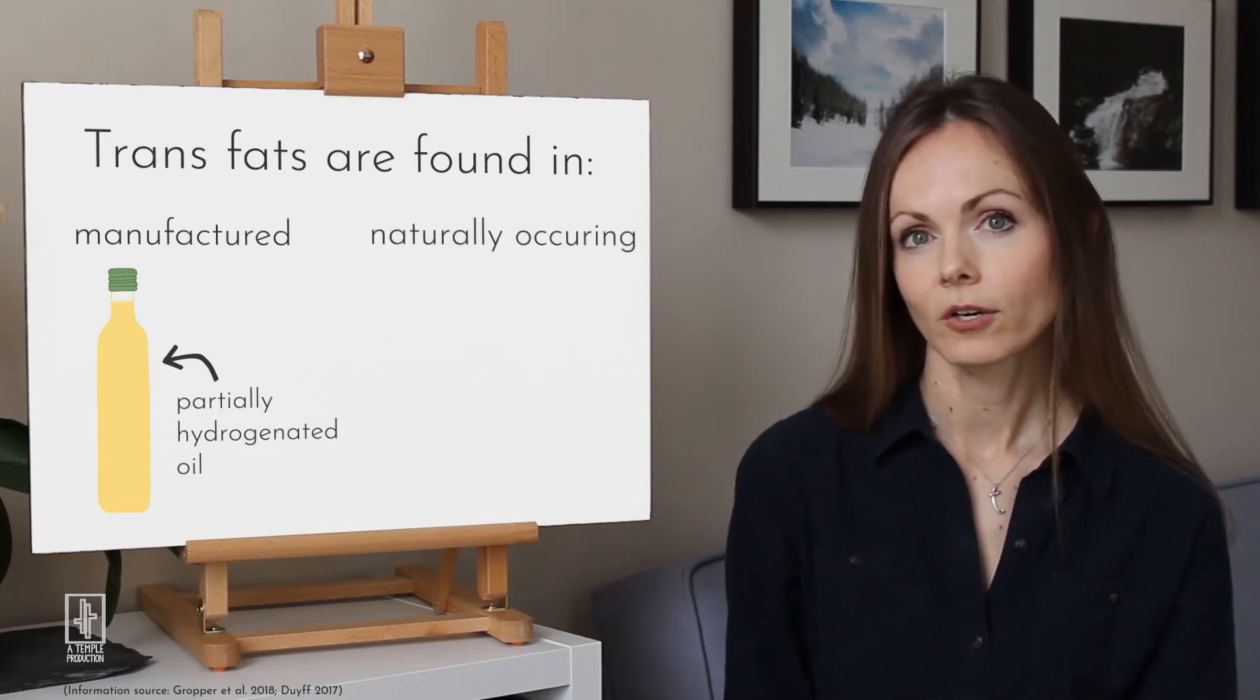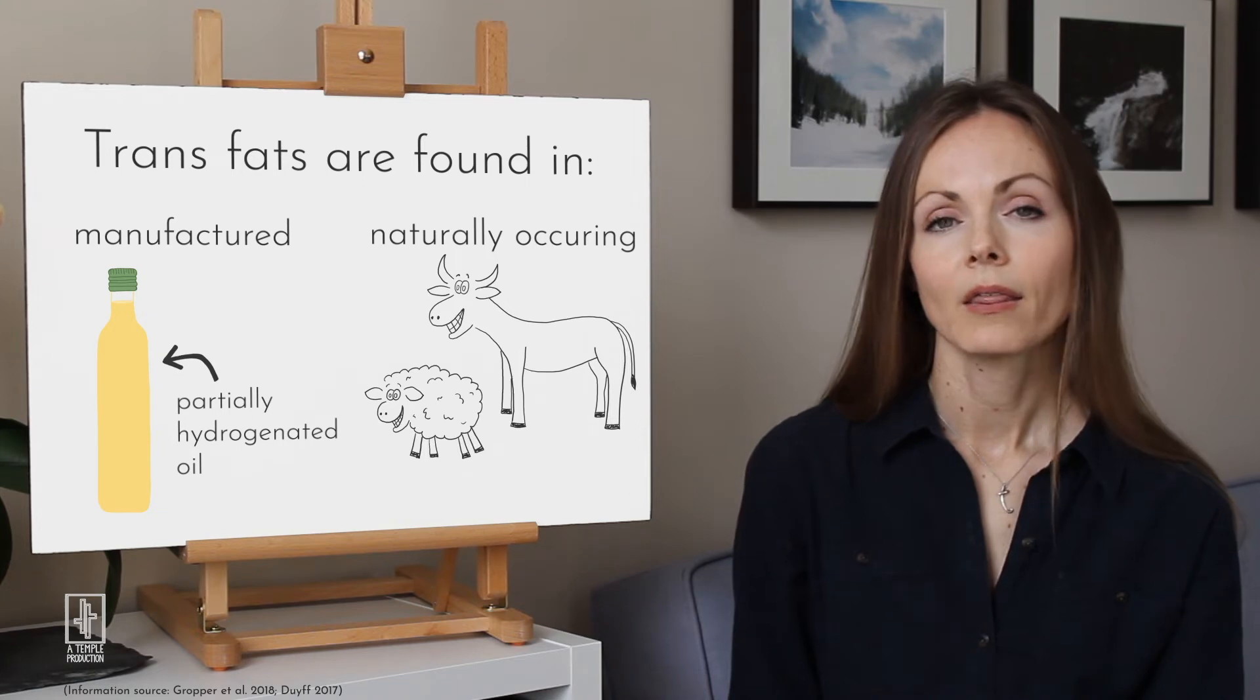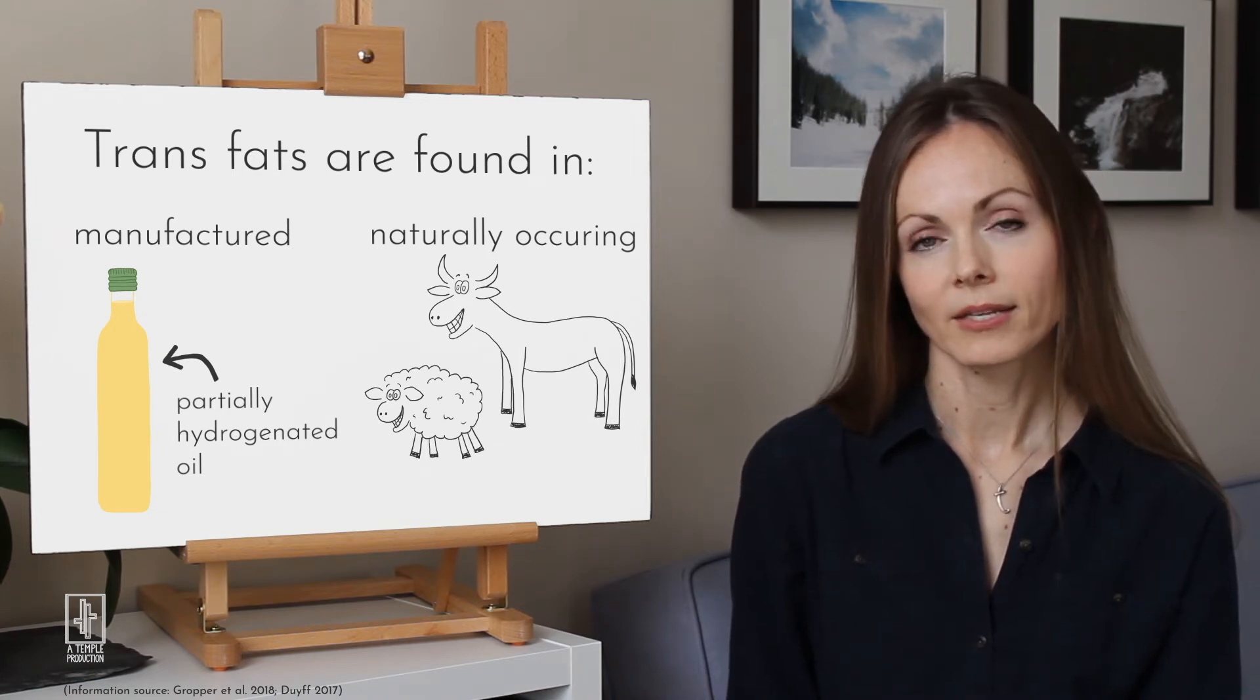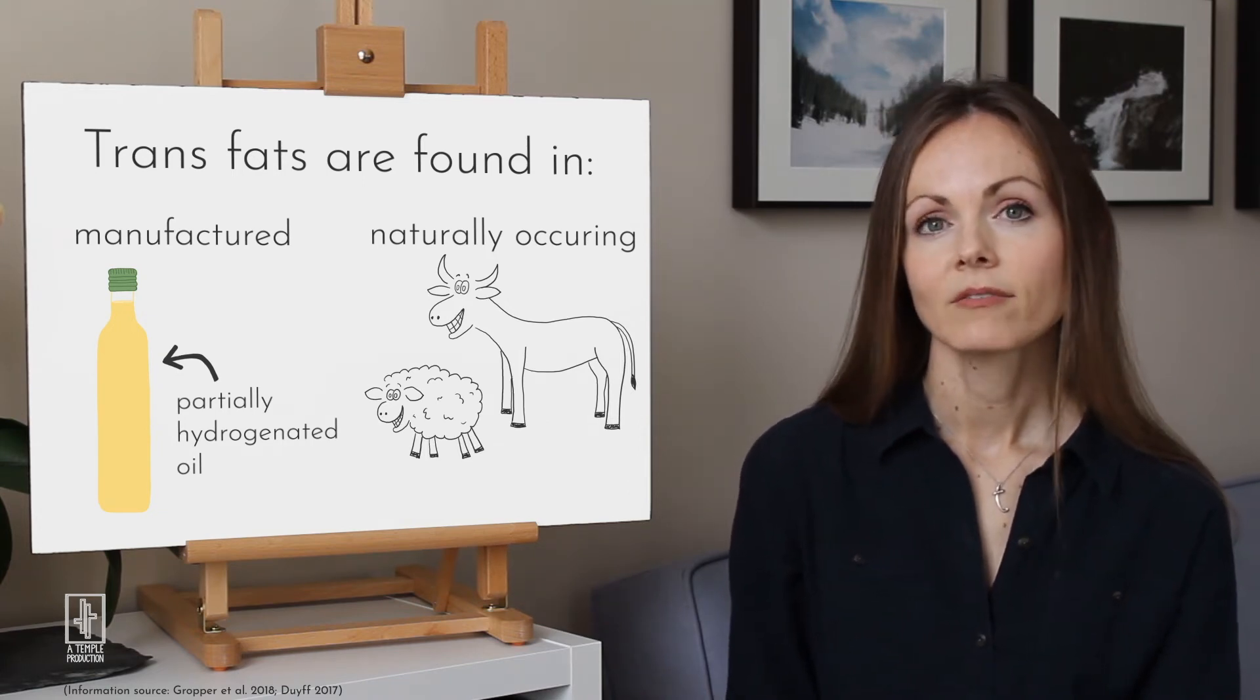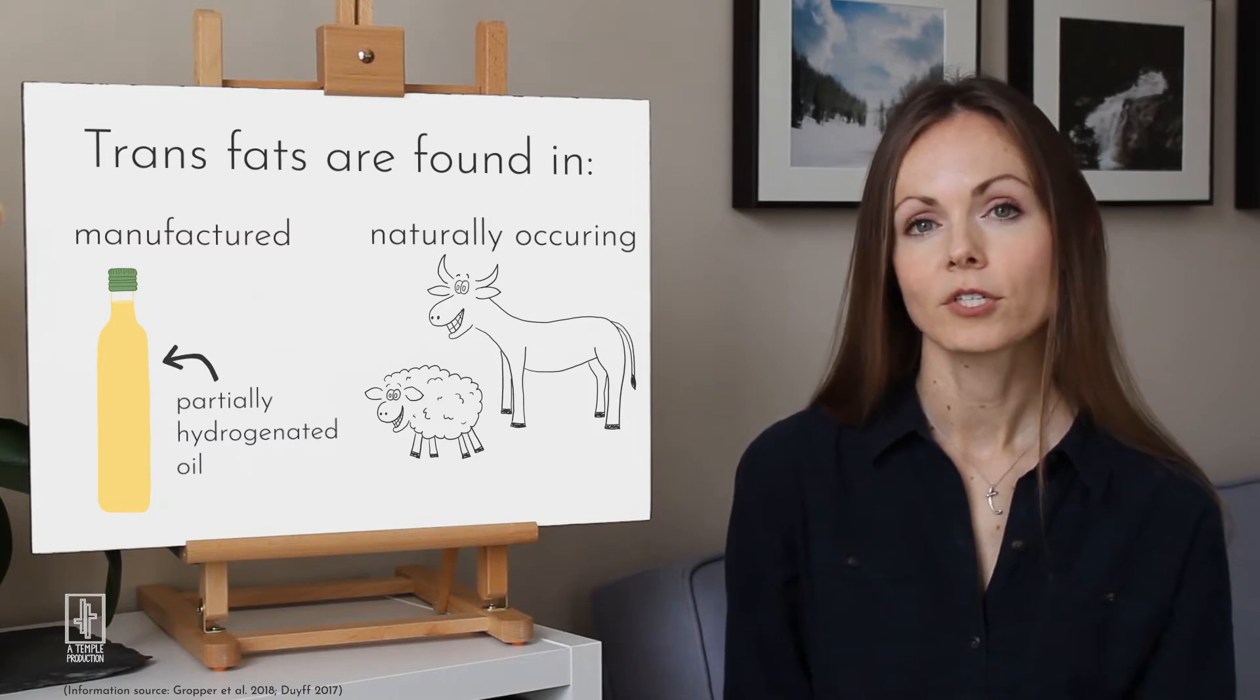The naturally occurring form is found in cows and sheep. Their ruminant bacteria create the trans fats. The effects of the naturally occurring trans fats are still being studied.